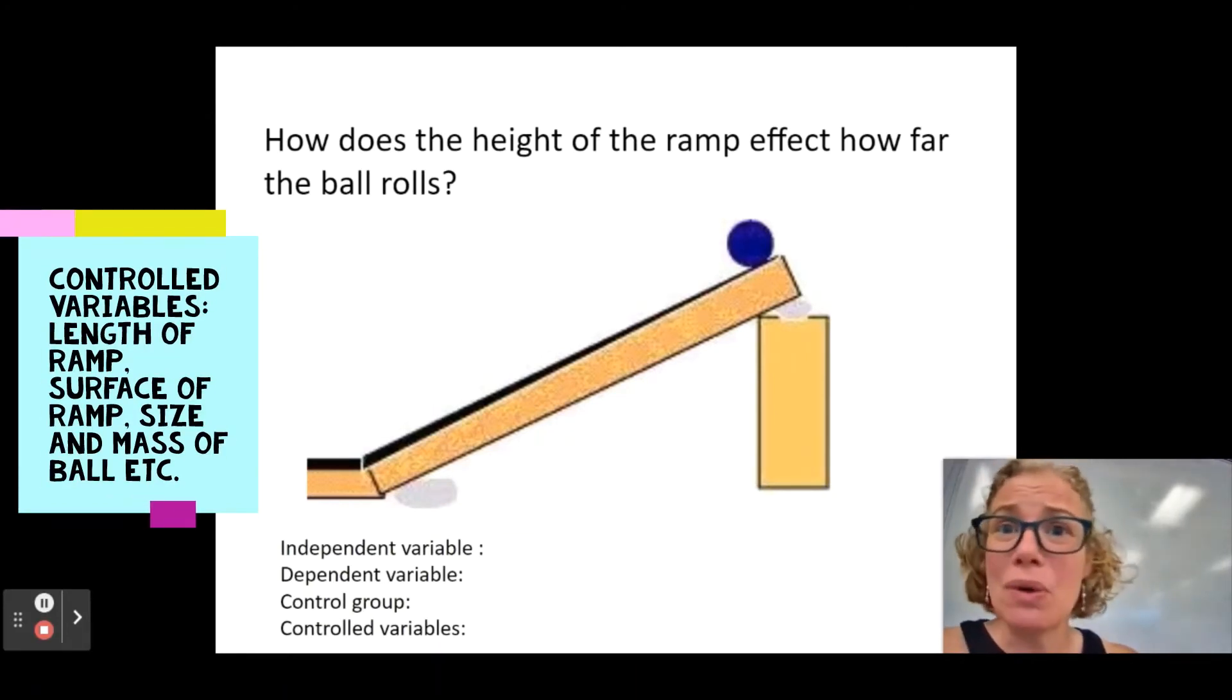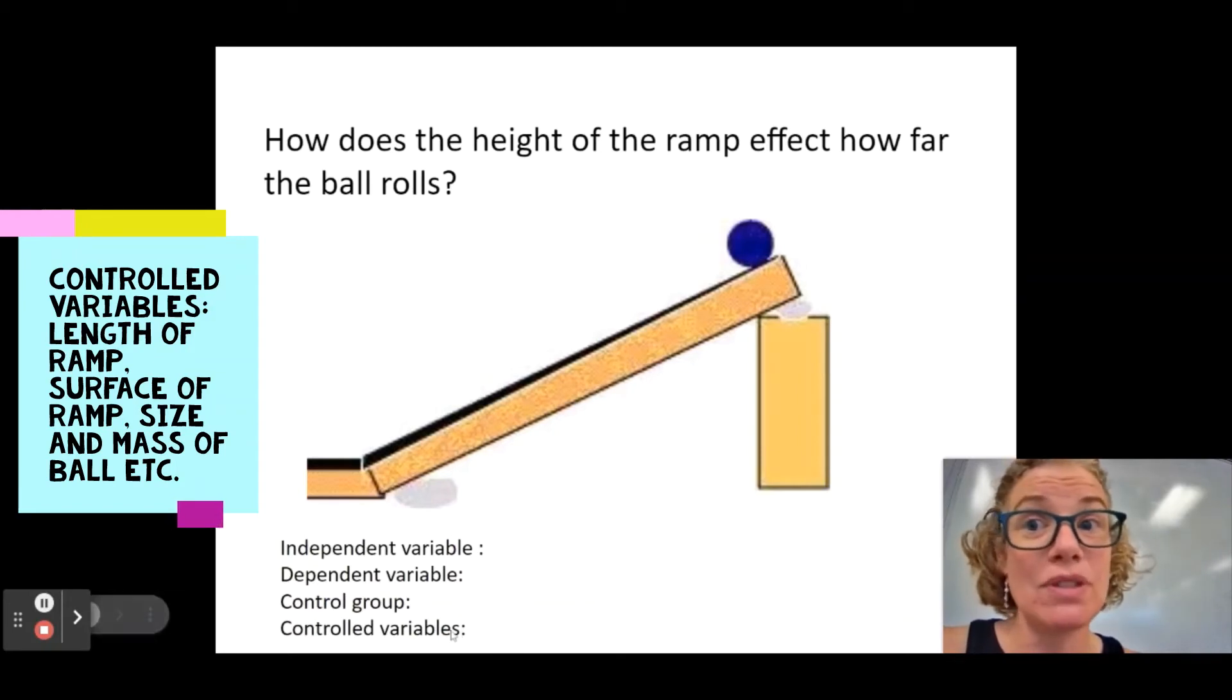The surface that it's got to roll on after it goes down the ramp. There's a big, long list here. And again, remember, controlled variables has an S telling us there should be a list, guys. Okay?